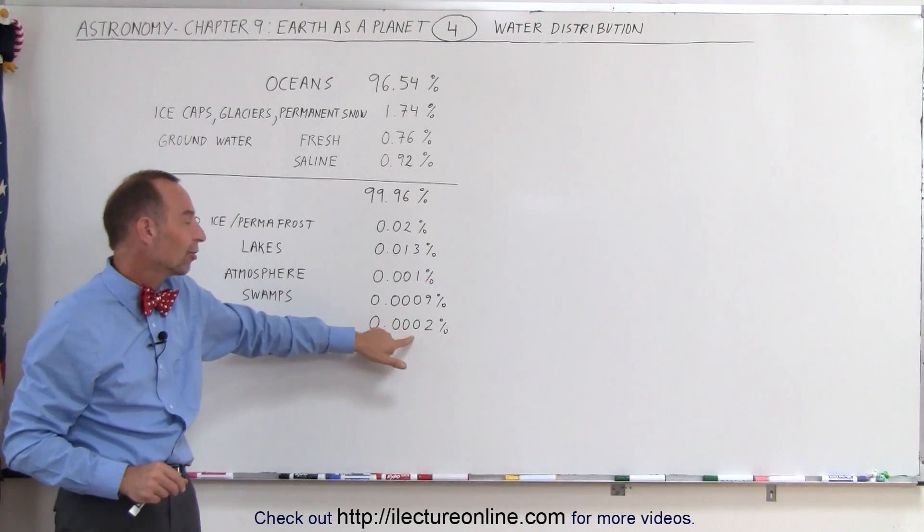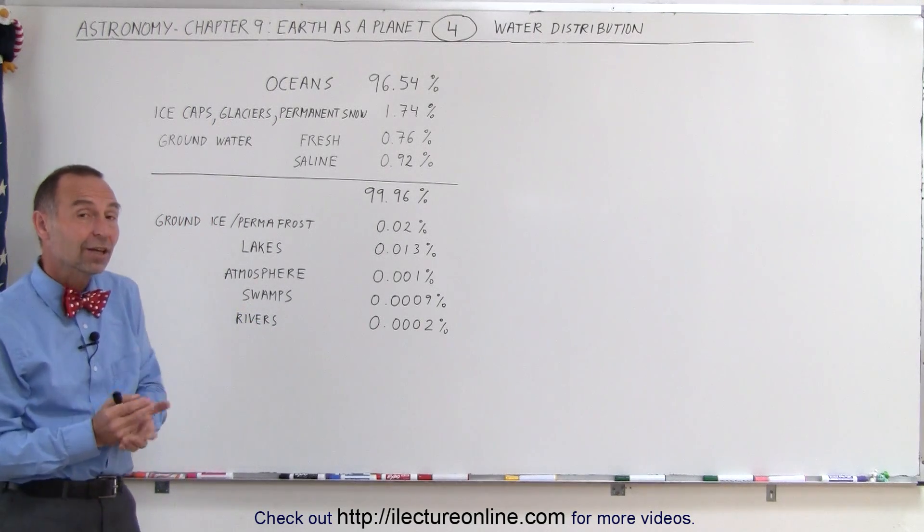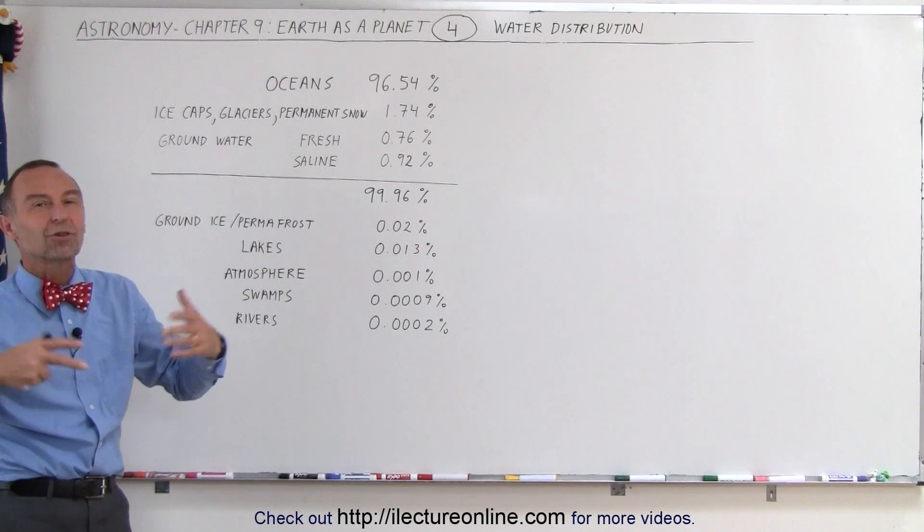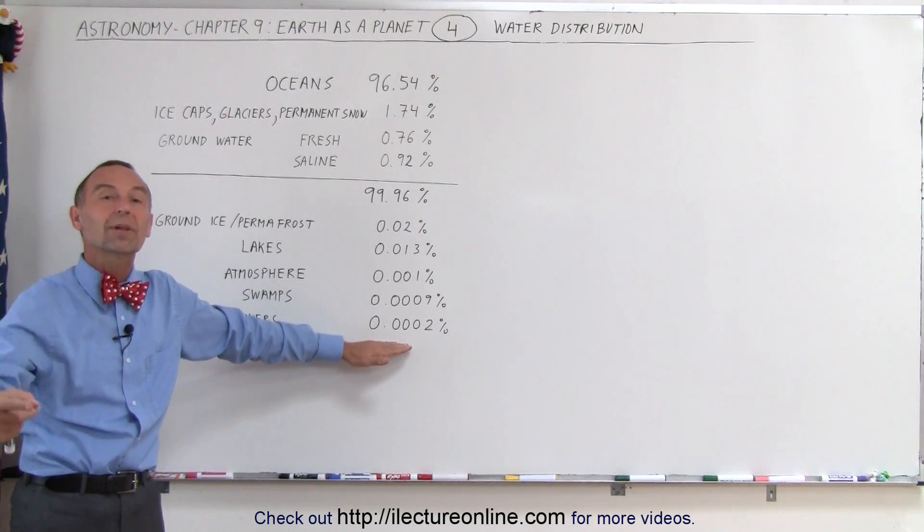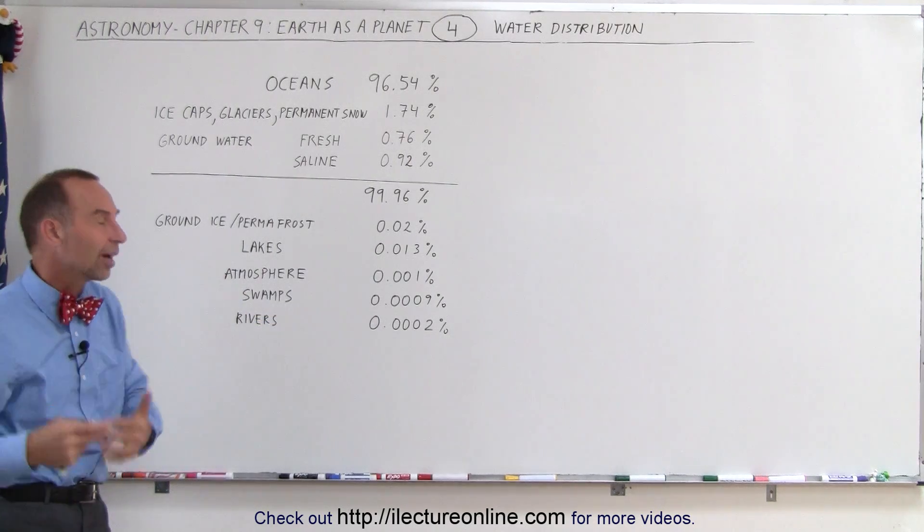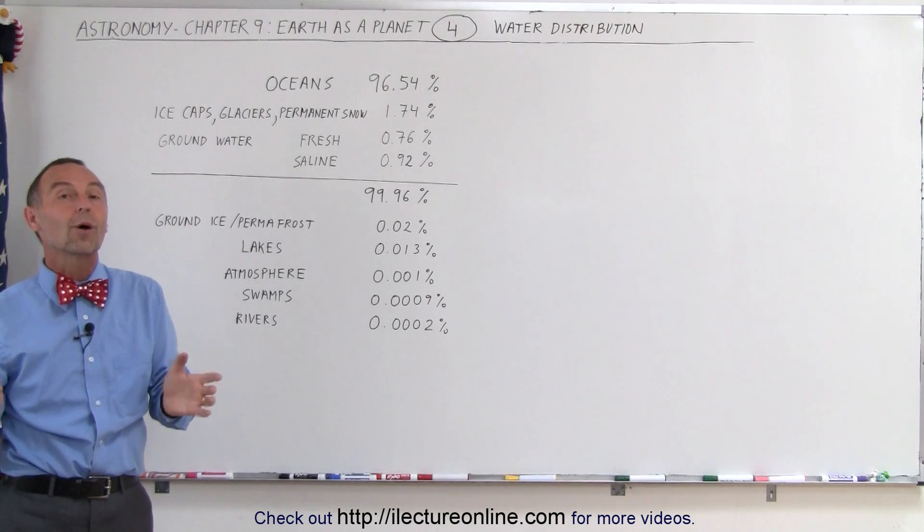That's kind of interesting. We always think that the rivers have so much plentiful water, but it's only a very small percentage. Of course the water in the rivers is constantly replenished through the hydrological cycle, but nevertheless it's interesting to see where the majority of the water on the earth is.